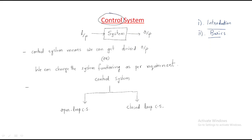Before discussing the control system, we need to know what a system is. A system simply takes some input and gives some output. In the universe, everything is a system. For example, we have a motor.